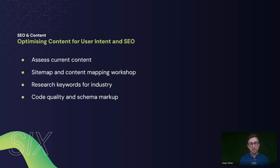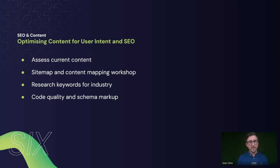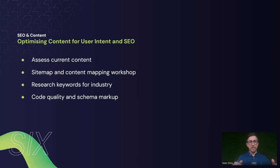A great way to do that is through a site map and content mapping workshop — something we offer at Webbox. We look at the overall site map and structure of the current website and content, then work with you to understand what are the most important sections and how to make the user journey and links between pages better. We put it into a site mapping tool so you can see it visually — it always works really well.